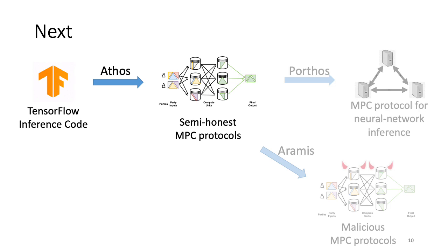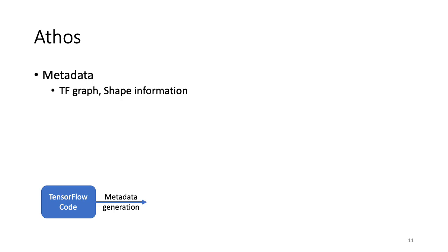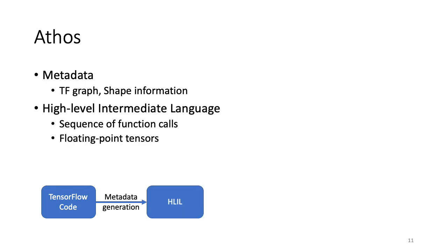I'll start by first elaborating on Athos, followed by Porthos and Aramis later in the talk. Recall from earlier slides that Athos is a compiler which takes TensorFlow inference code and outputs the corresponding semi-honest secure MPC protocol implementation. After the TensorFlow code is input to Athos, the first step of compilation generates metadata information which consists of two parts, TensorFlow graph and the shape information of all the tensors in the computation. This is followed by compilation of this metadata to a high-level intermediate language called HLIL. HLIL consists of a sequence of function calls and fully supports floating-point tensors.